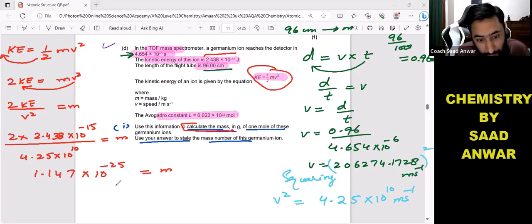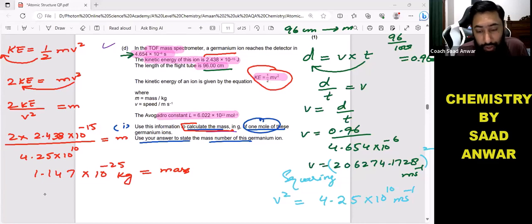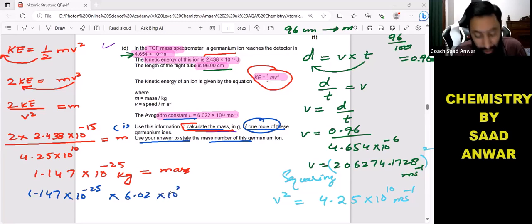This is the mass per ion. I have to find it for per mole, so multiply this with Avogadro's constant. I have to multiply this with Avogadro's constant: 6.02 times 10 raised to power 23.